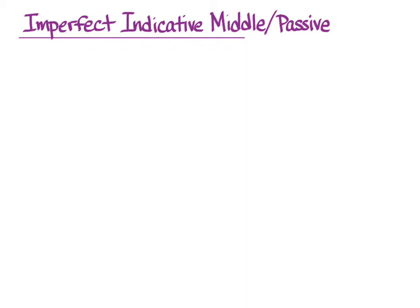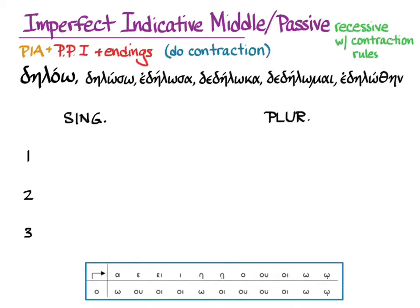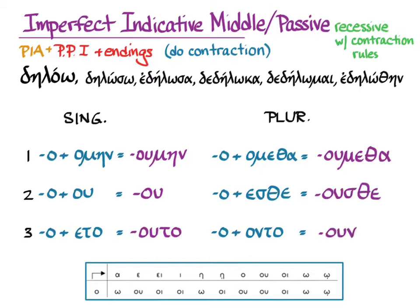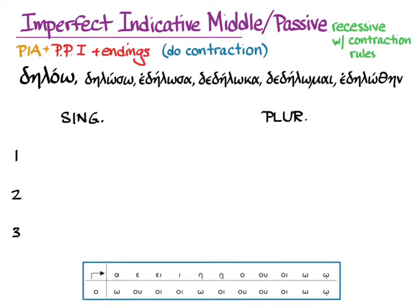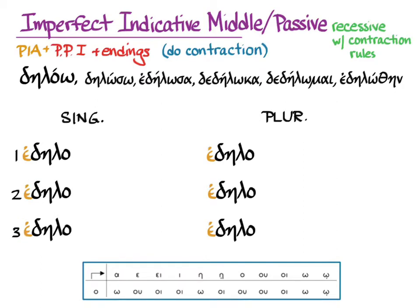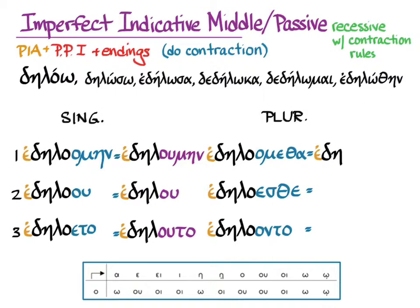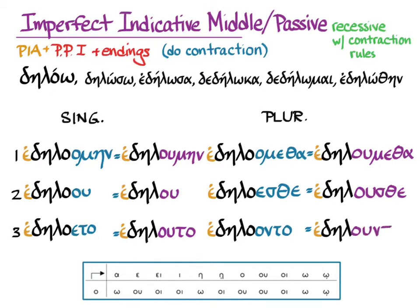For the imperfect indicative middle/passive, we again need the past indicative augment and the first principal part. The omicrons with the endings we know contract to: oumēn, ou, outo, oumetha, ousthe, ounto. It'll be recessive accent with contraction rules. Applied to delao, with our augmented stems and the endings we already knew, we get: edeloumēn, edelou, edelouto, edeloumetha, edelousthe, and edelounto.